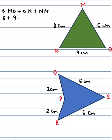plus ON is 9 cm, NM is 8 cm. Okay, so we will add it. 8 plus 6 is 14, 14 plus 9 is 23. 23 cm is the perimeter of this triangle.